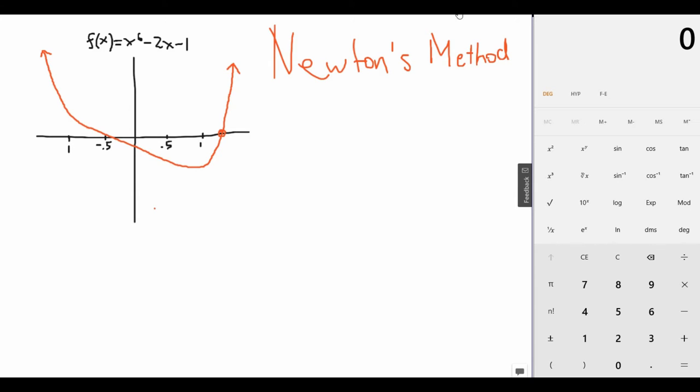And this method, combined with a bunch of other methods, is often what actual computer programs use, like Wolfram Alpha, to approximate these roots of these higher degree polynomials.